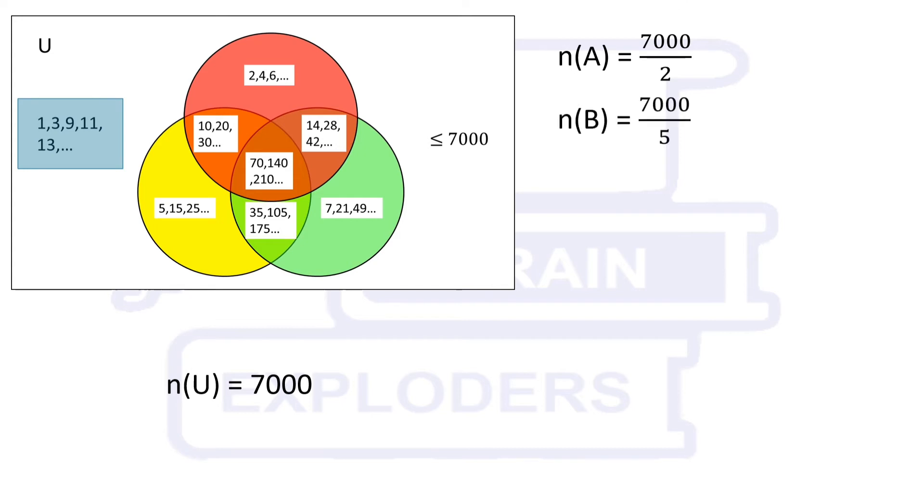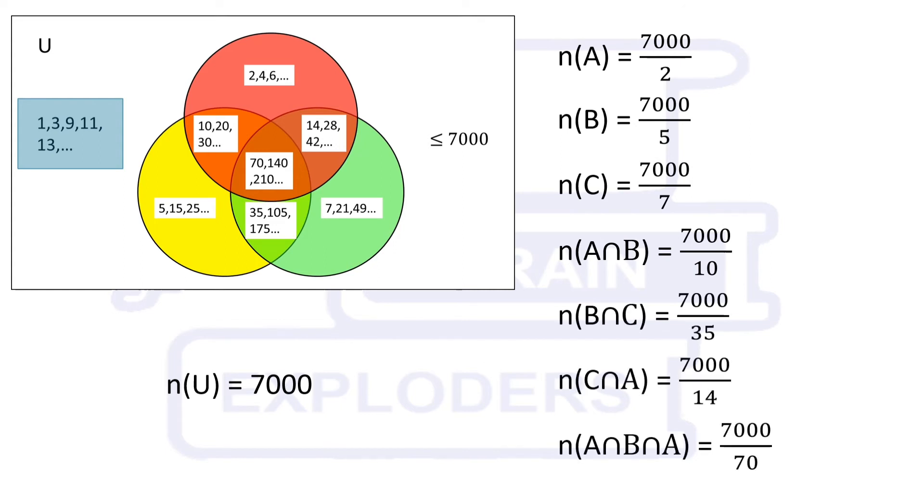Set B contains multiples of 5, hence the number of elements in it is 7000/5. Similarly, all the sets here contain multiples of any number, and therefore the number of elements in these sets can also be calculated in the similar way.